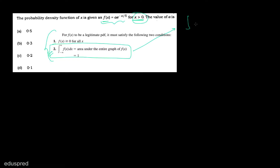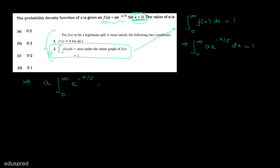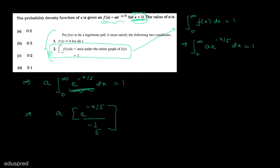For this question, the integral of a × e^(-x/5) from 0 to infinity must equal 1. Since a is a constant, we write: a × ∫e^(-x/5) dx from 0 to infinity = 1. Integrating e^(-x/5) gives e^(-x/5) divided by (-1/5), evaluated from 0 to infinity.